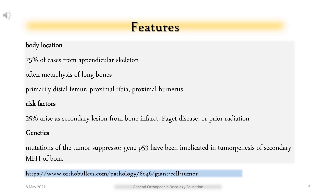Regarding body location, 75% of cases arise from the appendicular skeleton, often in the metaphysis of long bones — primarily the distal femur, proximal tibia, and proximal humerus. As for risk factors, 25% arise as secondary lesions from bone infarct, Paget disease, or prior radiation. Genetic mutations of the tumor suppressor gene P53 have been implicated in tumorigenesis of secondary MFH of bone.